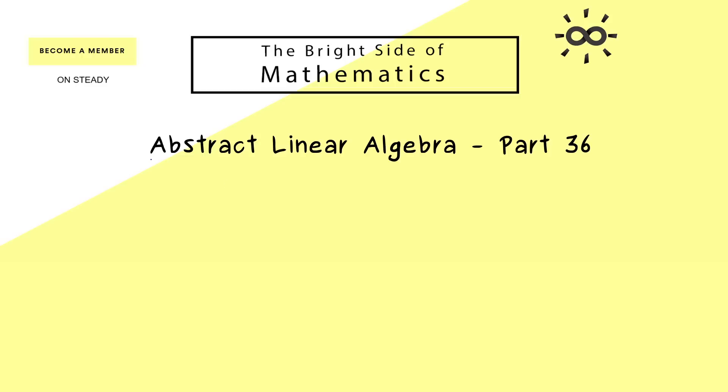Hello and welcome back to Abstract Linear Algebra, the video series where we talk about general linear maps, matrices and what we can do with them. In today's part 36 we go deeper into the theory behind the Jordan normal form. In particular we will define so-called generalized eigenspaces.